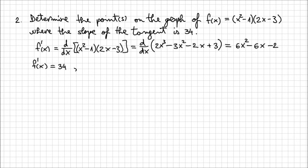So I'm going to say f'(x) equals 34. That means the expression we just determined, 6x² - 6x - 2, is 34. And this is nothing else than an equation that we can solve.